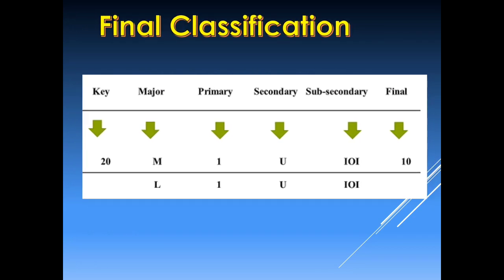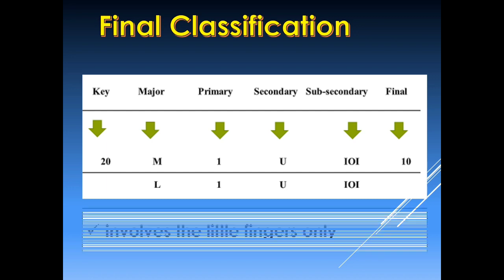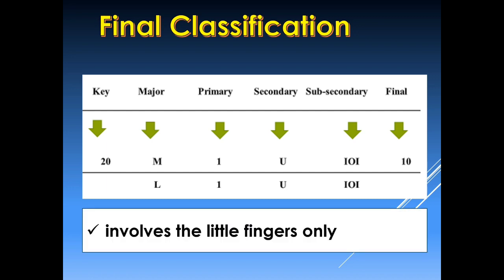Final classification involves the two little fingers — the right little finger under block 5 and the left little finger under block 10. It is always expressed or represented with a number and is exhibited at the extreme right side of the classification line, which is on the right of the sub-secondary classification.